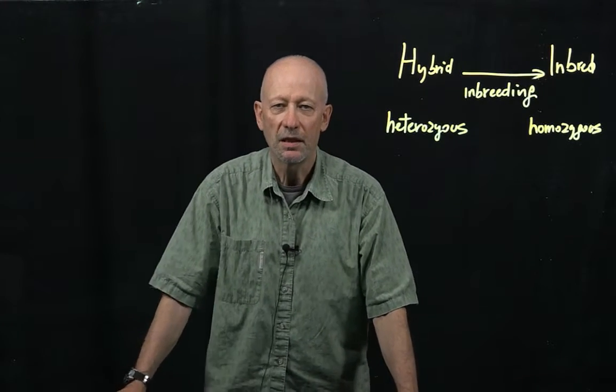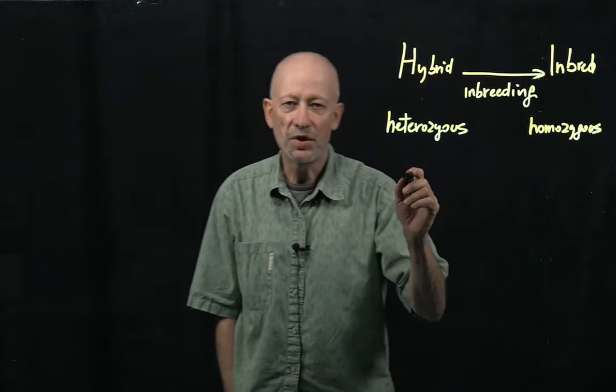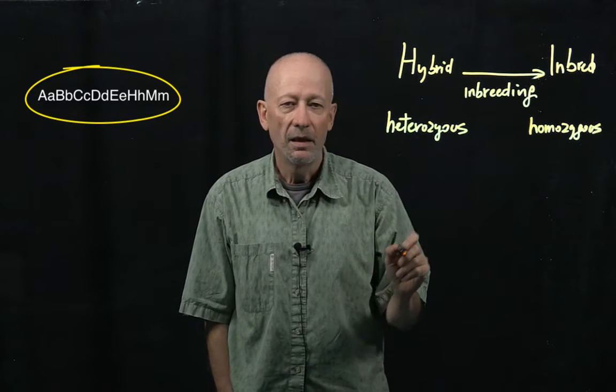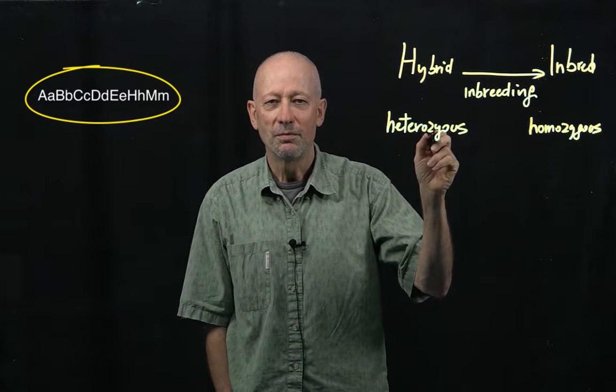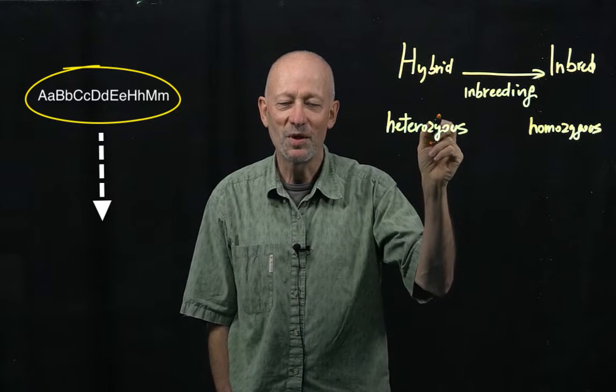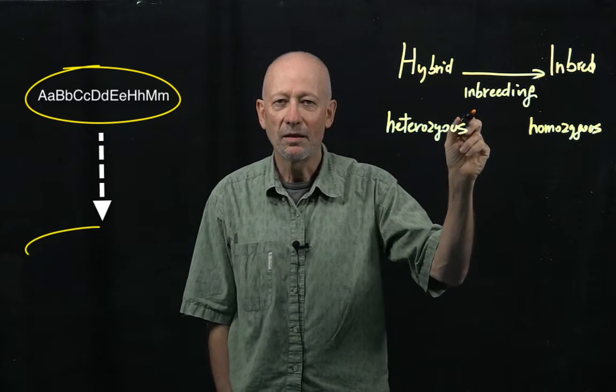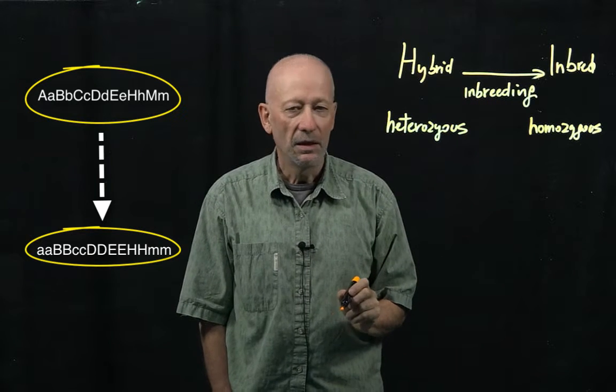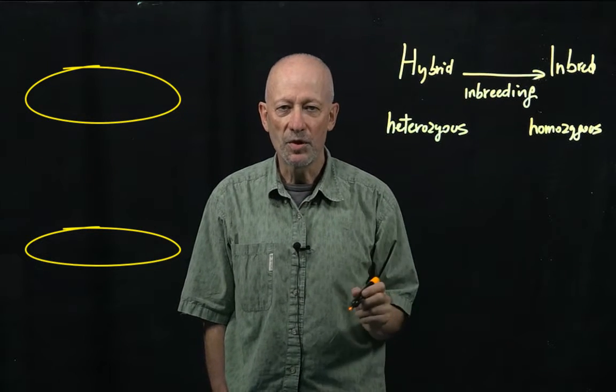Inbreeding is what happens when you take a hybrid organism, which is defined by having many heterozygous loci, and you subject it to either selfing or crossing to something which is similar, and we get another type of organism after a number of generations which is called an inbred. The inbred is defined by being homozygous at many loci.